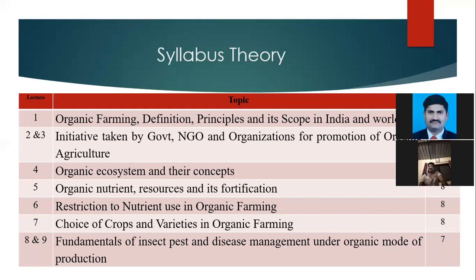Another topic covers organic nutrient resources and their fortification. This includes bulky organic manures, concentrated organic manures such as farm manure (FYM), compost, vermicompost, and other products prepared after decomposition applied to the farm. Fortification includes the preparation of FYM, compost, vermicompost, and other types of composts, as well as biodynamic preparations — jivamrut, bijamrut, amritpani, and vermiwash — and their production and application for farm productivity.